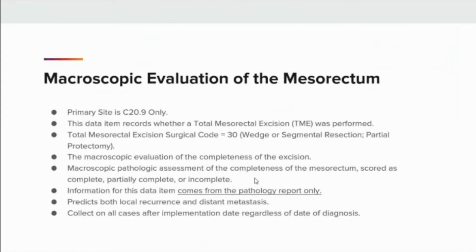Let's look at a couple of items regarding macroscopic evaluation of the mesorectum. This field is coded for primary site topography code C20.9 only. A total mesorectal excision was performed — in STOR 2022 rectal surgical code assigned as 30 — involves macroscopic evaluation and macroscopic pathologic assessment of the completeness of the mesorectum, which is scored as complete, partially complete, or incomplete. Macroscopic evaluation of the mesorectum predicts both local recurrence and distant metastasis. Studies have demonstrated that TME improves local recurrence rate and the corresponding survival by as much as 20%. This field will be left blank when primary site is not coded to rectum, and neoadjuvant treatment does not affect coding.